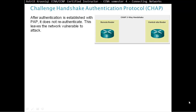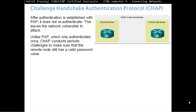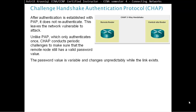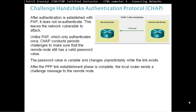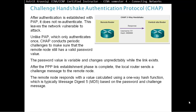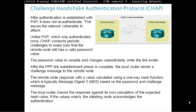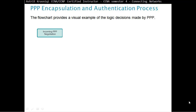Challenge Handshake Authentication Protocol, or CHAP. After authentication is established with PAP, it does not re-authenticate, which leaves the network vulnerable to attack. Unlike PAP, which authenticates only once, CHAP conducts periodic challenges to make sure that the remote node still has a valid password value. The password value is variable and changes unpredictably while the link exists. After the PPP link establishment phase is complete, the local router sends a challenge message to the remote node. The remote node responds with a value calculated using a one-way hash function — typically MD5 — based on the password and challenge message. The local router then checks the response against its own calculation of the expected hash value; if the values match, the initiating node acknowledges the authentication.